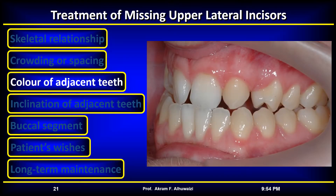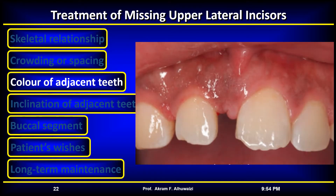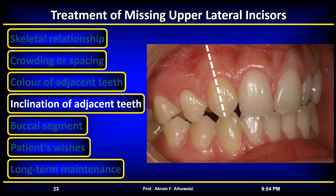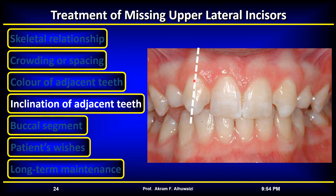The color and form of the adjacent teeth — the canines and central incisors — is also important. If the permanent canines are much darker than the incisors and are pointed in shape, modification of them to resemble lateral incisors will be more difficult. The inclination of the canines is also of importance: retracting mesially inclined canines and opening the space is easier, and protracting distally inclined canines and closing the space is easier.